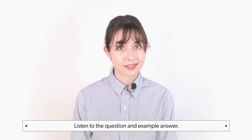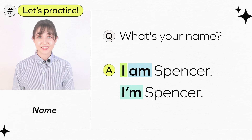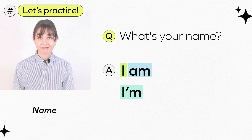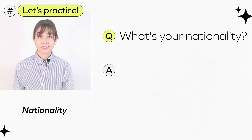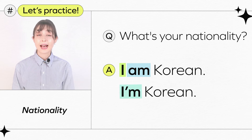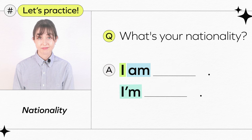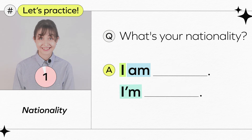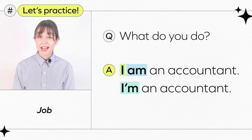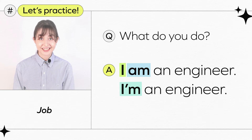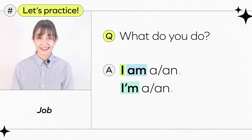Listen to the question and example answer. Try to answer the questions with your own information. What's your name? I am Spencer. I'm Spencer. Now it's your turn — what's your name? What's your nationality? I am American. I'm American. I am Korean. I'm Korean. I am Chinese. I'm Chinese. What's your nationality? What do you do? I am a teacher. I'm a teacher. I am an accountant. I am an engineer. I'm an engineer. Use an before words that start with a vowel sound, like accountant — an accountant. You try. What do you do?